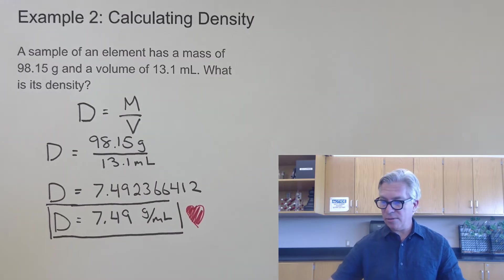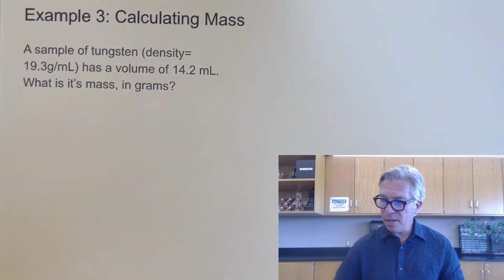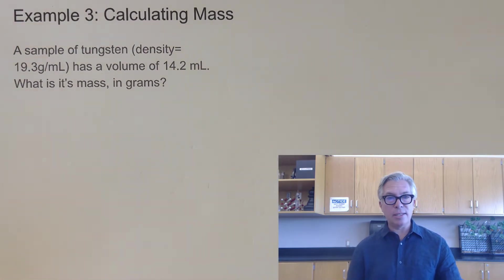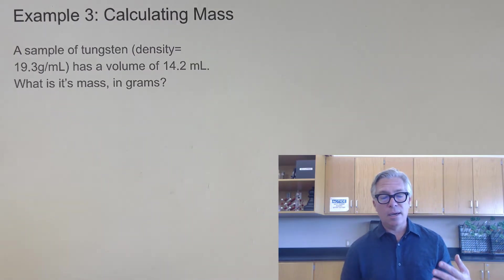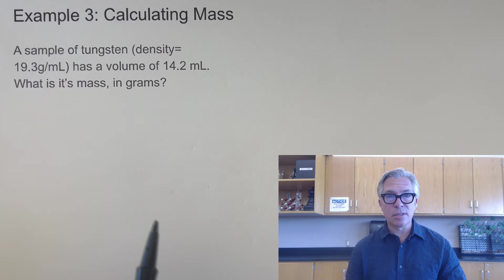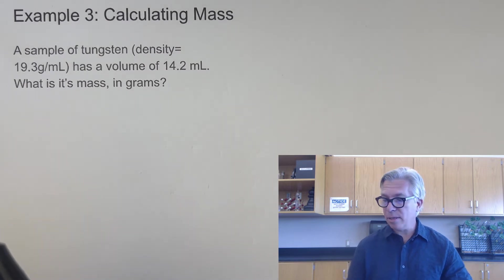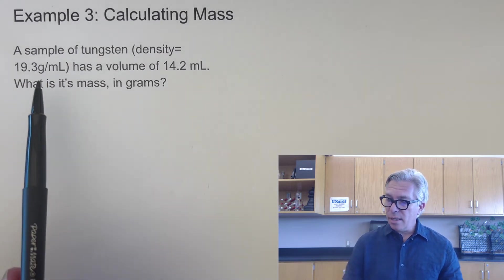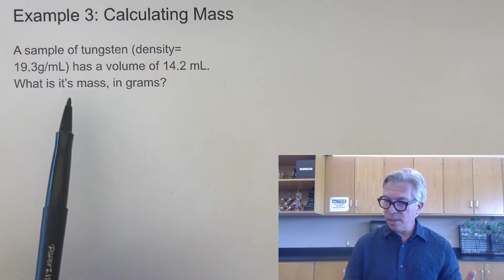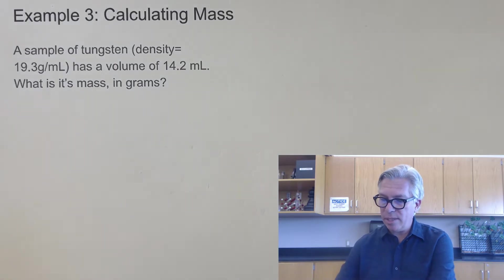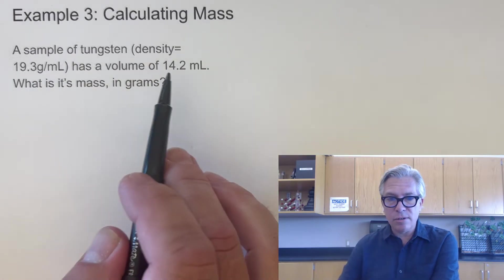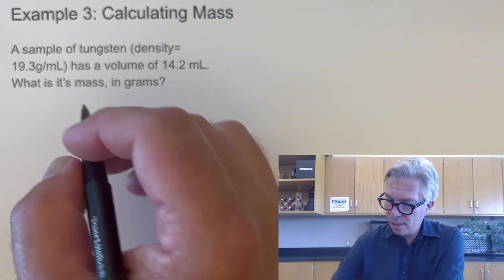Okay, so that's how we solve for density using that equation. Now let's switch it up a little bit. A sample of tungsten, density 19.3. Incidentally, tungsten is one of the most dense elements on the periodic table. It's not the most dense. The title belongs to osmium or iridium, depending on who you ask. And it has a density of 19.3 grams per milliliter. It has a volume of 14.2 milliliters. What is its mass in grams? Okay, so again, we look at it. We have the density. We have the volume. Now we need to find the mass. So we are going to use the same formula, d equals m over v.